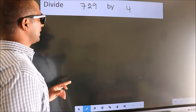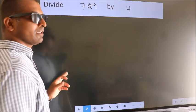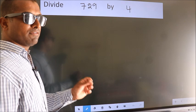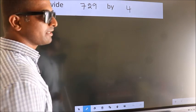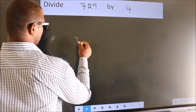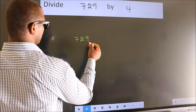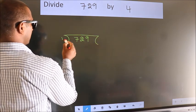Divide 729 by 4. To do this division, we should frame it in this way. 729 here, 4 here.